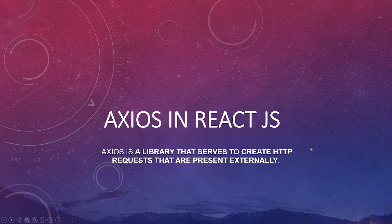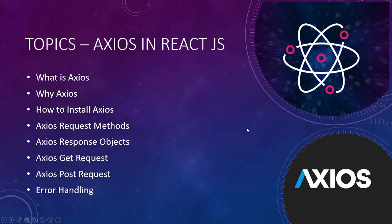Axios in React.js is a library that serves to create HTTP requests that are presented externally. The topics we'll cover are: what is Axios, why we use Axios, how to install Axios, Axios request methods, Axios response objects, Axios GET request, Axios POST request, and error handling. We'll try to cover all these topics in this one video.